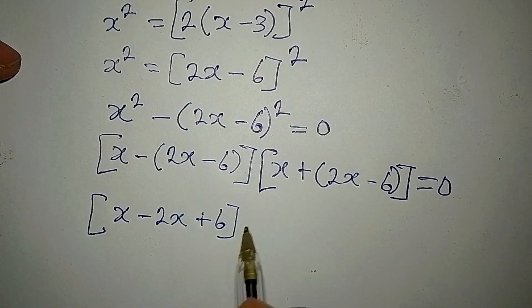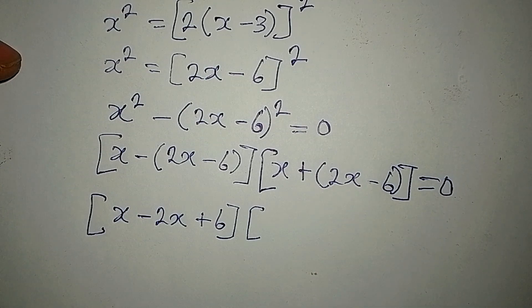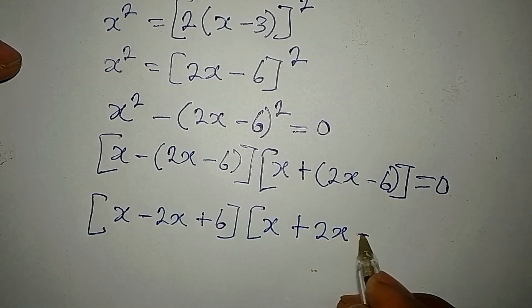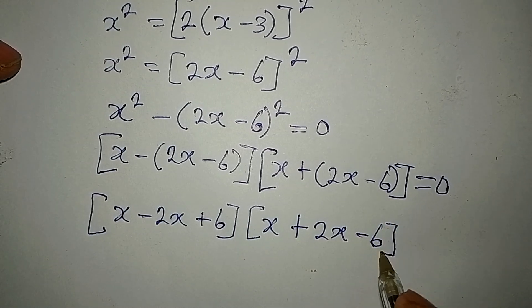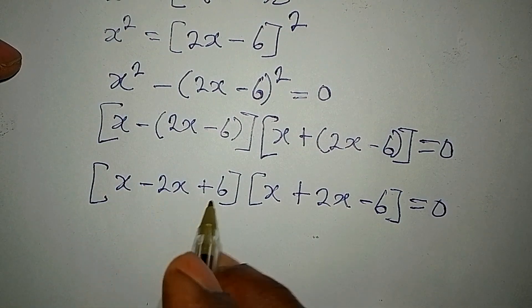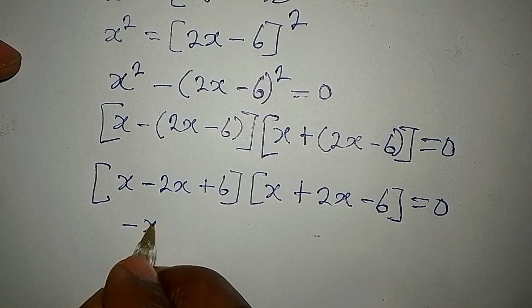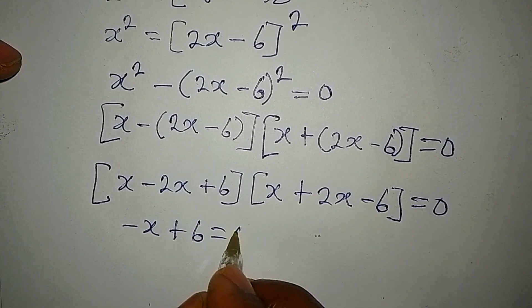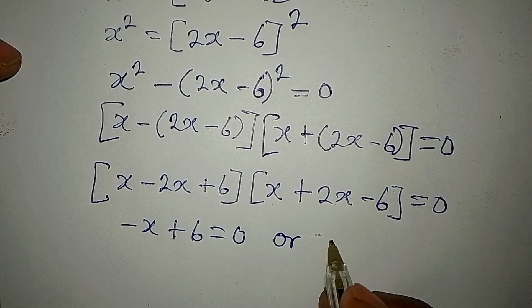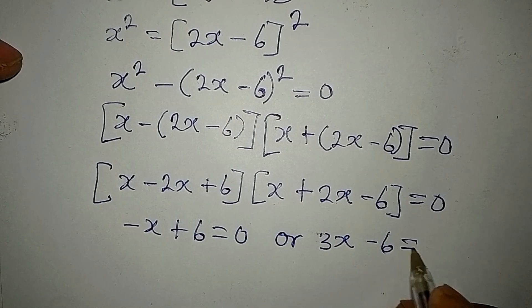The positive sign opens the second bracket without changing the signs, so we write x plus 2x minus 6, equals zero. Combining: x minus 2x gives minus x, then plus 6 equals 0. And from the second bracket, putting them together gives 3x minus 6 equals 0.